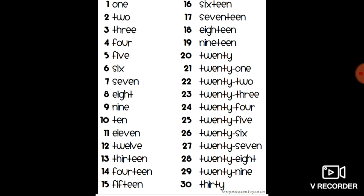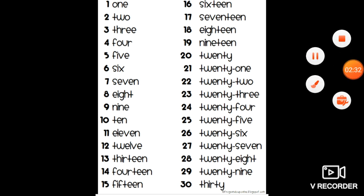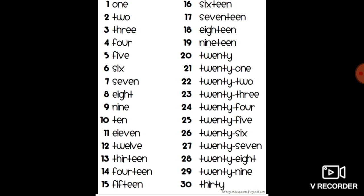21 - TWENTY and ONE. 22 - TWENTY and TWO. 23 - TWENTY and THREE. 24 - TWENTY and FOUR. 25 - TWENTY and FIVE. 26 - TWENTY and SIX. 27 - TWENTY and SEVEN. 28 - TWENTY and EIGHT. 29 - TWENTY and NINE. 30 - T-H-I-R-T-Y.